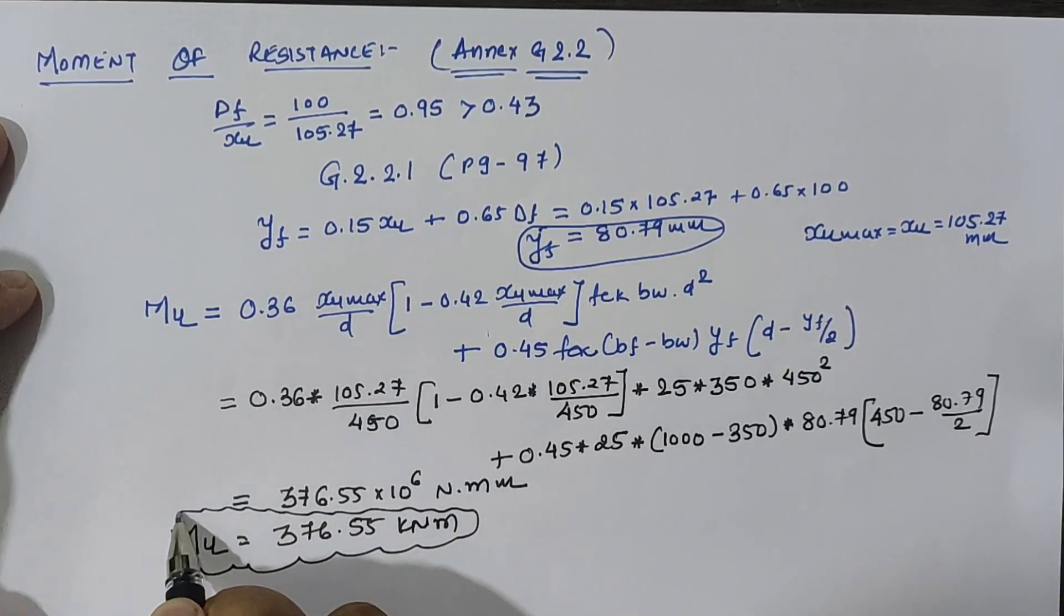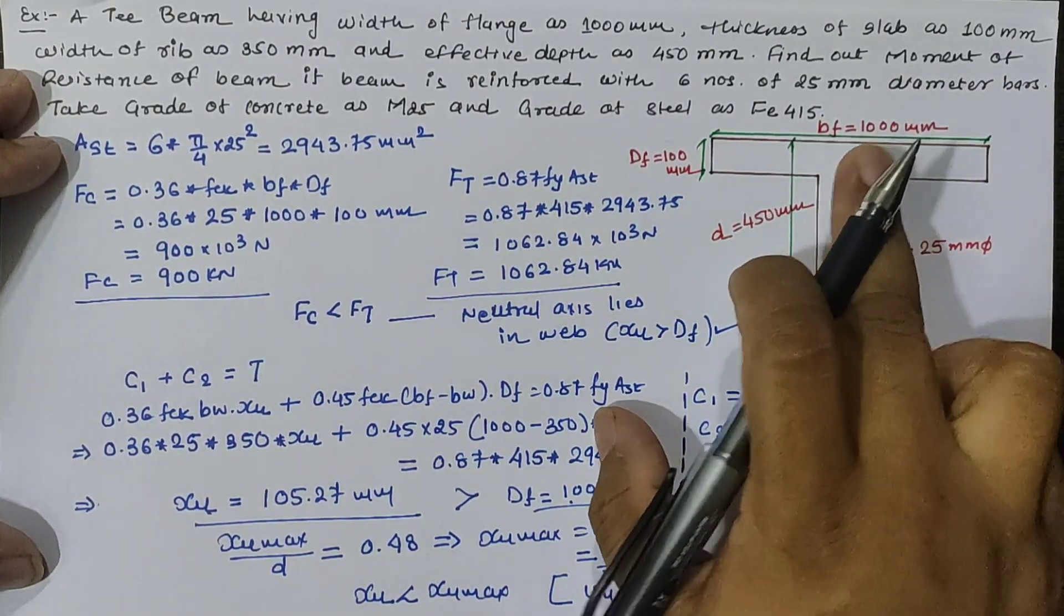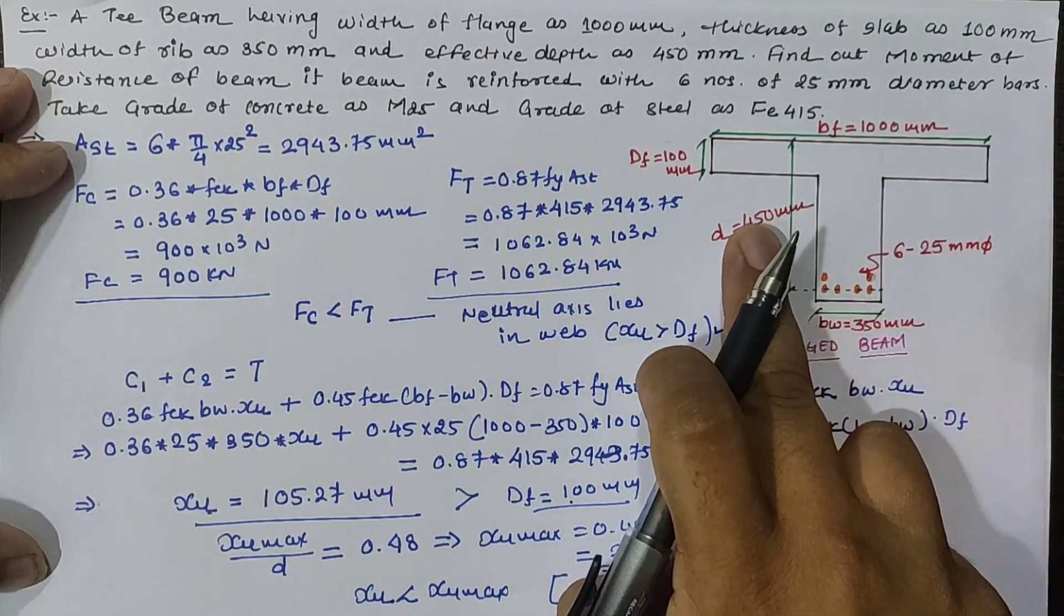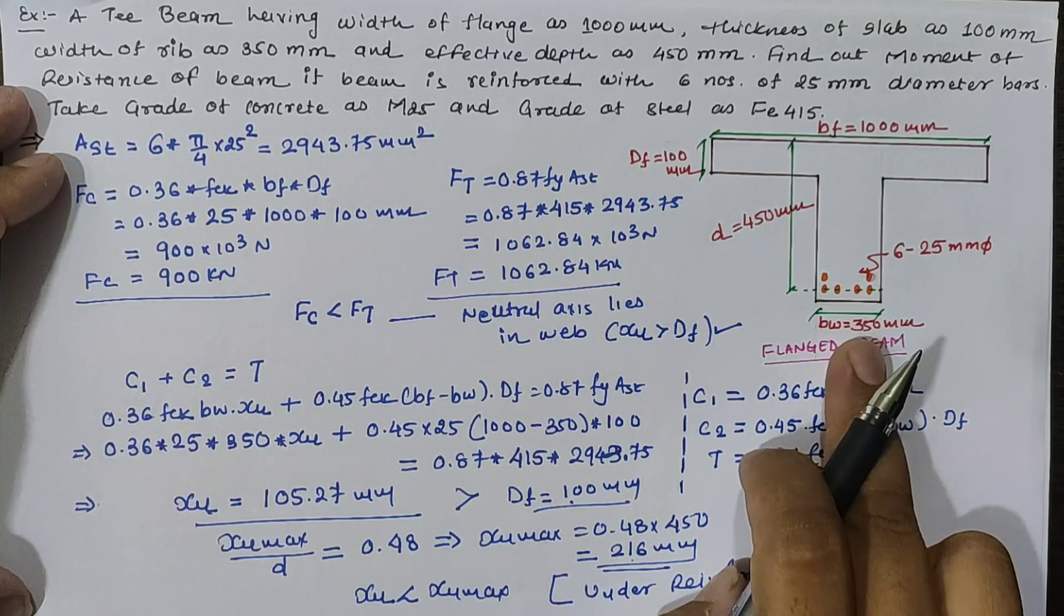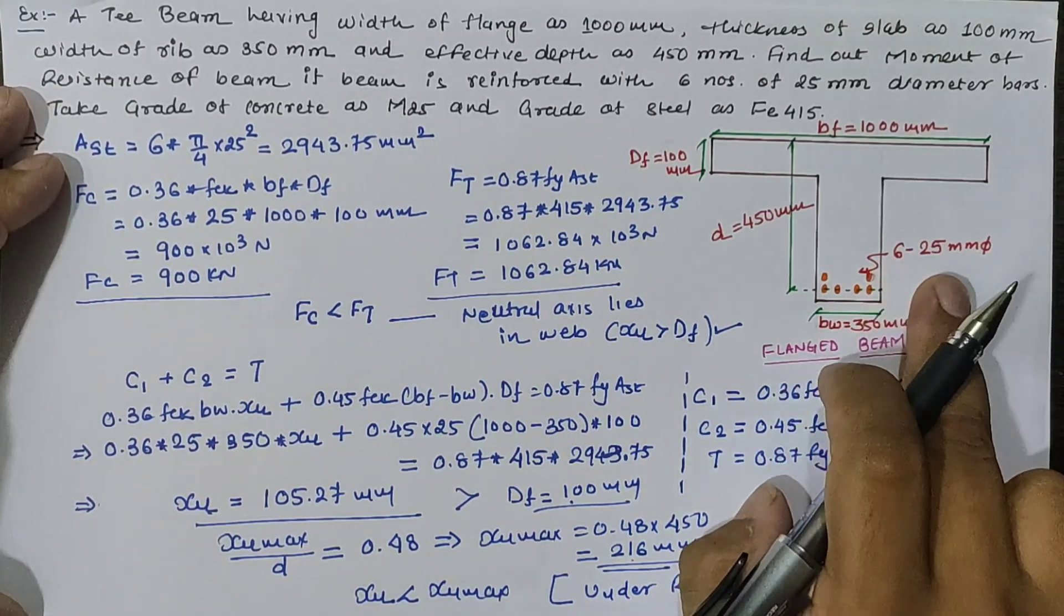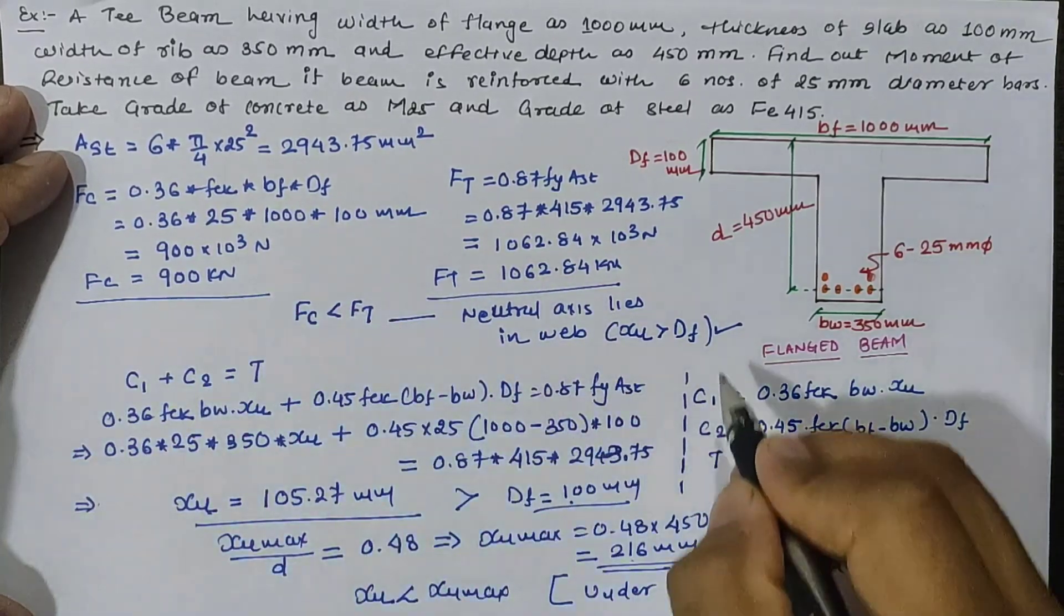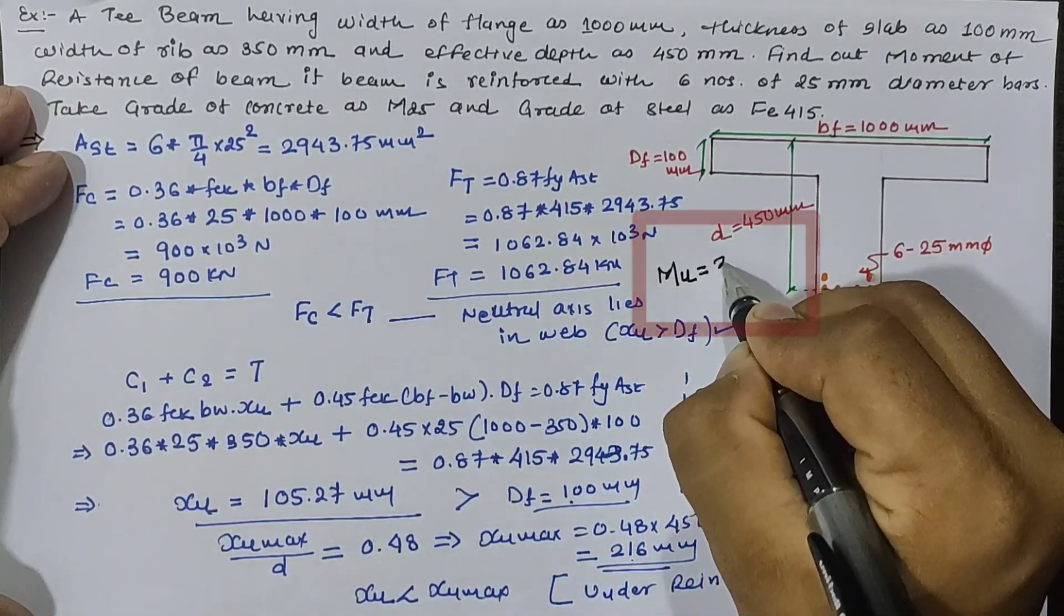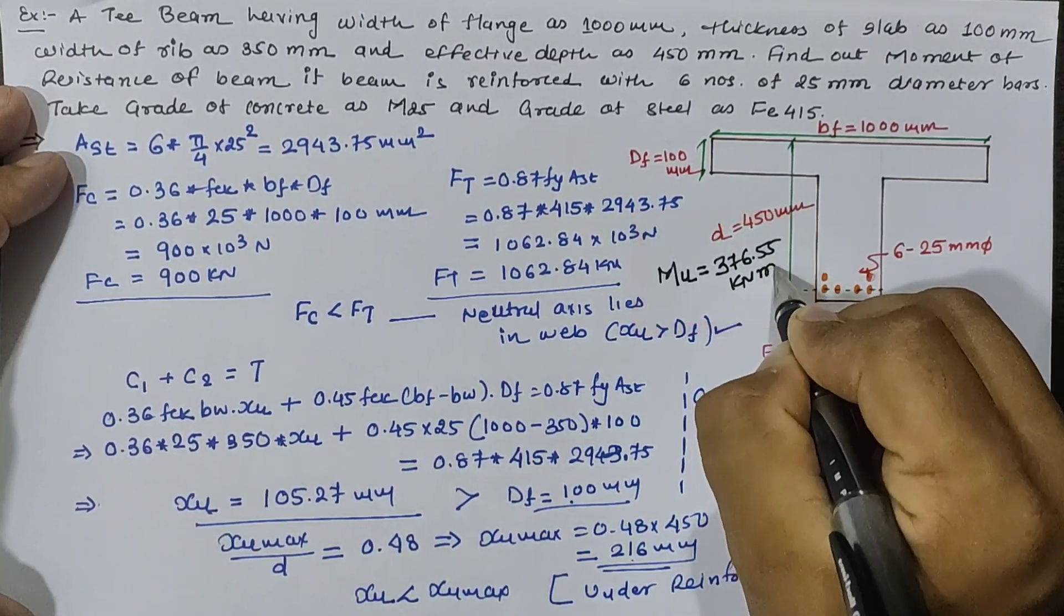It indicates that if we have given the width of the flange of T beam as 1000, depth of flange 100, effective depth as 450, and width of the web as 350 mm, which is reinforced with six numbers of 25 mm diameter reinforcement bar, then our moment of resistance is equal to 376.55 kNm.